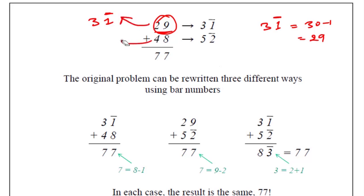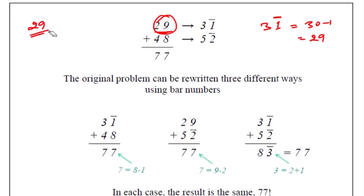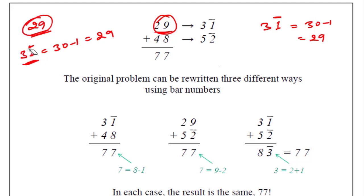Similarly, what can we write for 48? Now, if we write 29 in bar form, 31 bar means 30 minus 1, that is 29. So 31 bar is equal to 29. Both are equal.